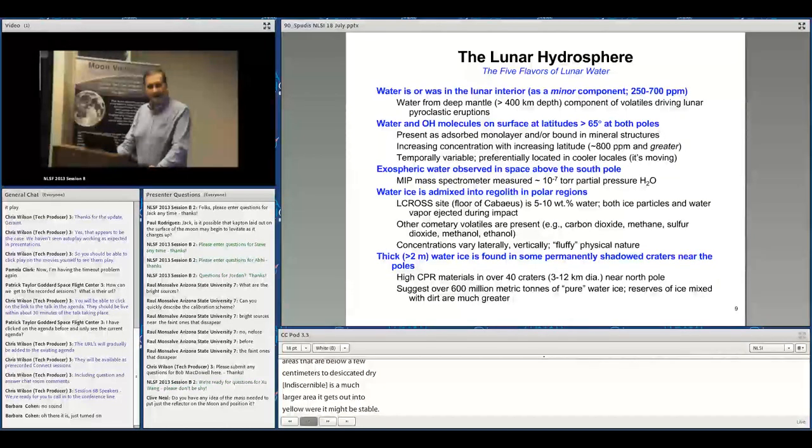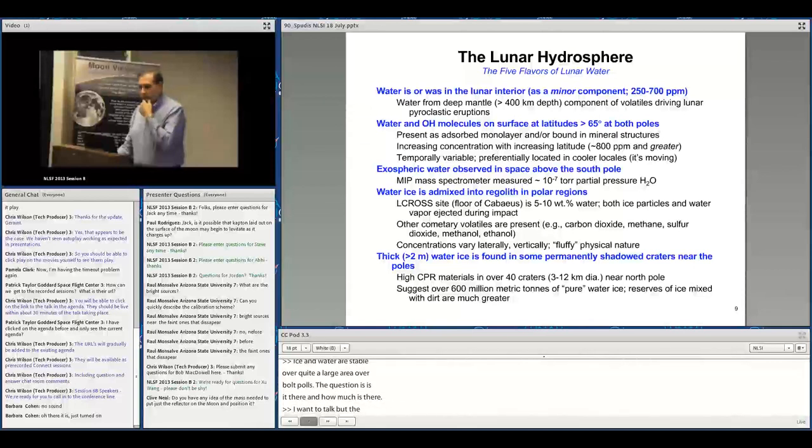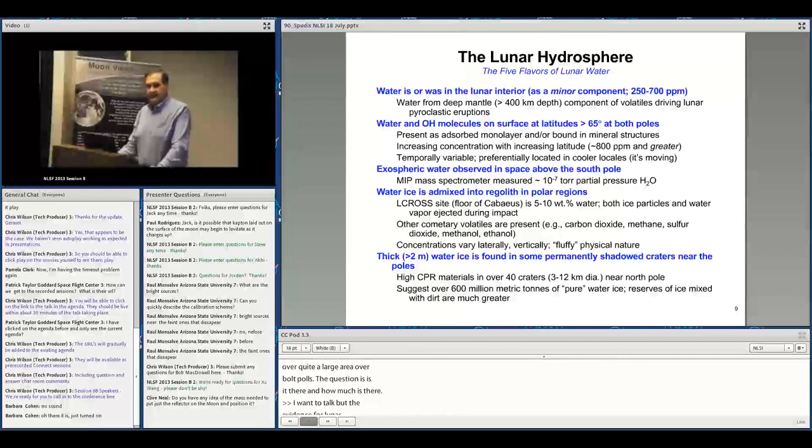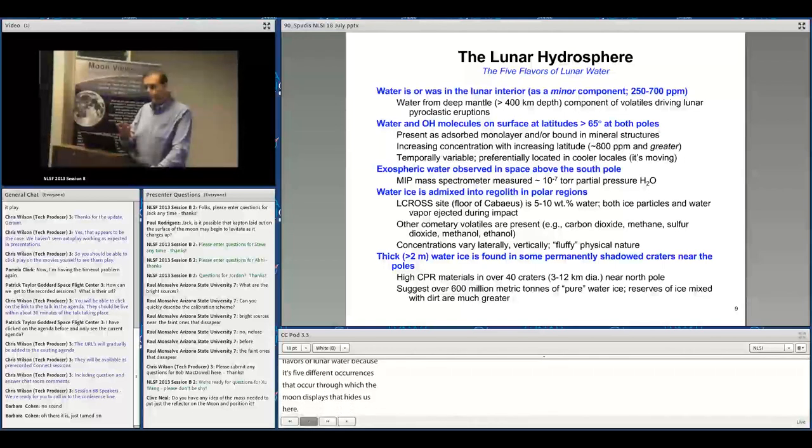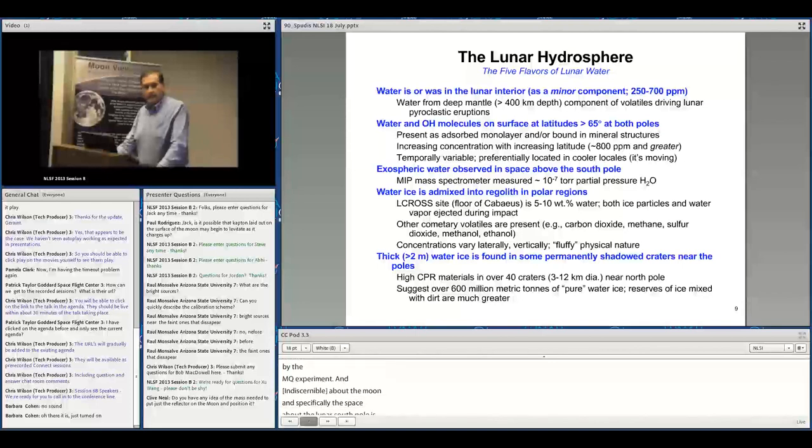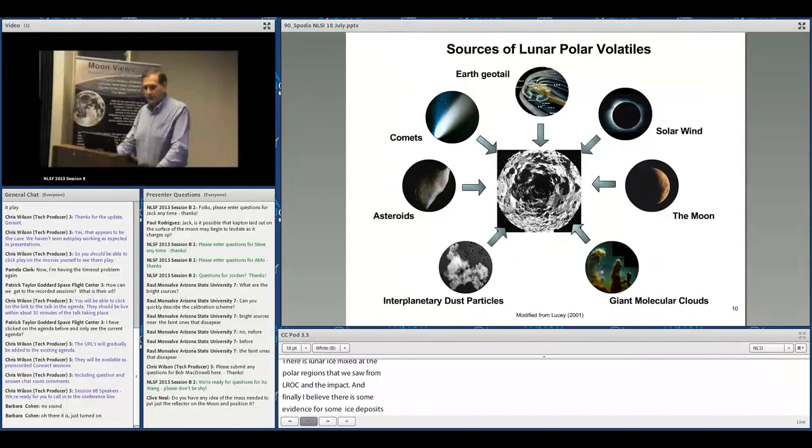I want to discuss evidence for lunar water, what I call the five flavors: water in the Moon's interior discovered by SMART-1 mission around 2007 in Apollo 15 green glass; hydroxyl molecules on the surface at high latitudes from M³ on Chandrayaan; exospheric water above the south pole measured by Chandrayaan's Moon Impact Probe; water ice in polar regolith from LCROSS; and evidence for thick water ice deposits in permanently shadowed craters.